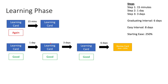One day later you see the card again — it's still a learning card and you know the answer, so you hit Good one more time. Whenever you hit Good, you move on to the subsequent step. Before we were on step two, but now when we hit Good we move on to step three, which says we'll wait three days before we see the card again.